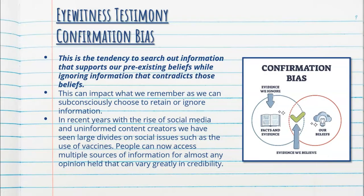Next, we have confirmation bias — the tendency to search out information that only supports your pre-existing belief and completely ignore information that contradicts it. Basically, you confirm your own bias without looking at all the facts. This can impact what we remember as we can subconsciously choose to retain or ignore information. In recent years, with the rise of social media and uninformed content creators, we have seen large divides on social issues such as vaccines, where people access multiple sources of varying credibility.